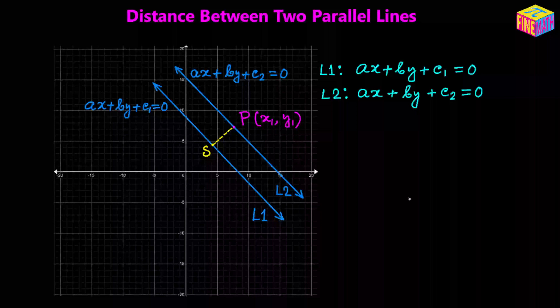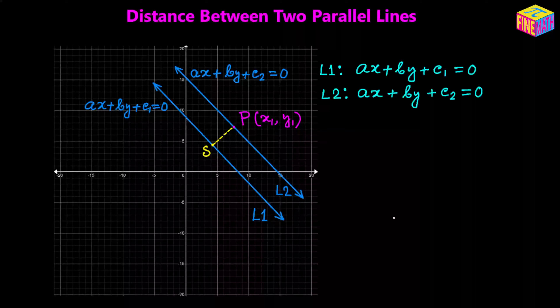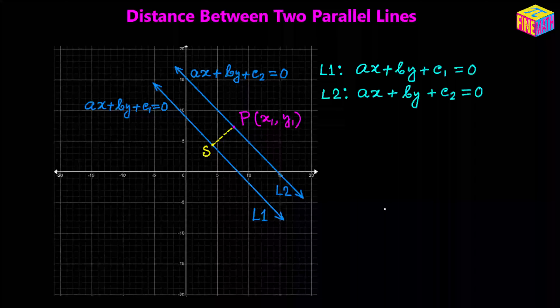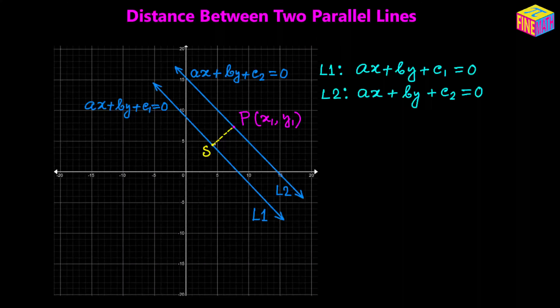Let's assume that we have two parallel lines L1 and L2 as in the diagram, and also let's assume that there is a point P on the line L2 and the coordinates of P are x₁, y₁. We have to find the distance between these two parallel lines. If we drop a perpendicular from P onto line L1 and the perpendicular lands on point S, then PS would be the distance between the two parallel lines. So essentially we have to find out the length of PS.